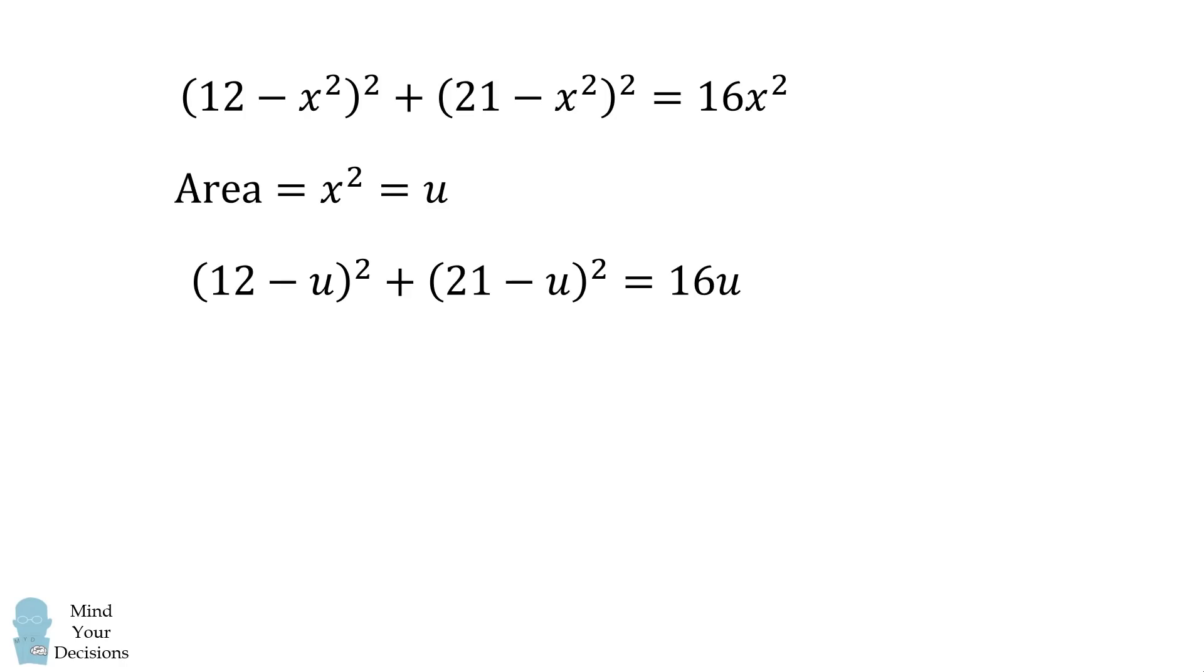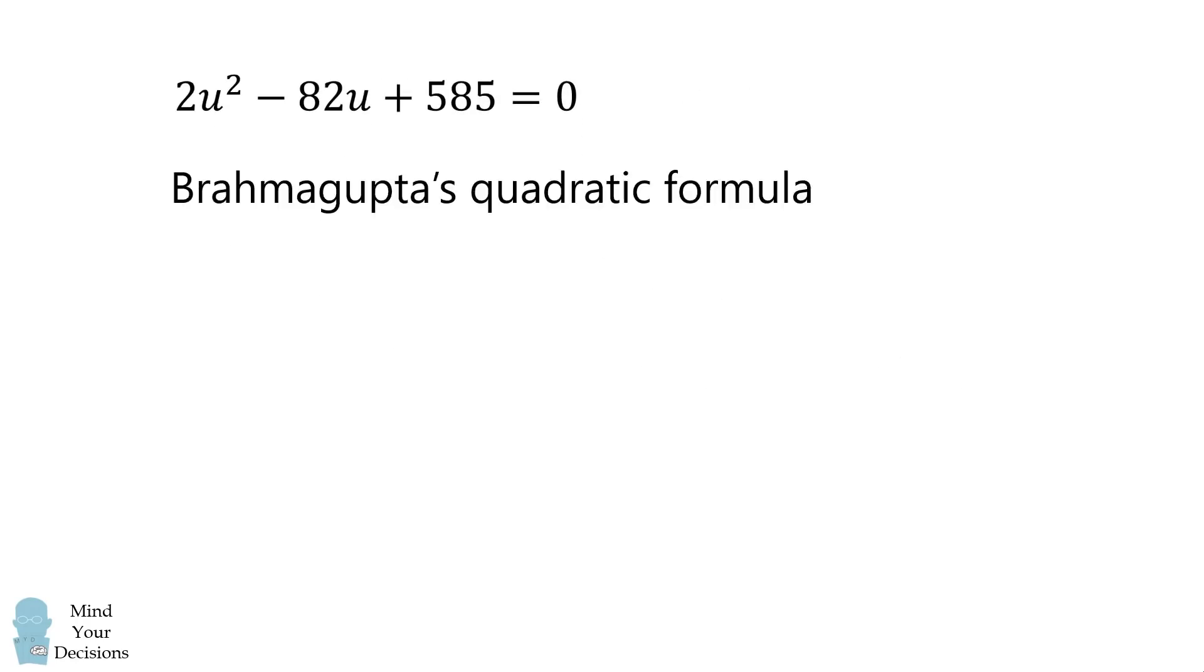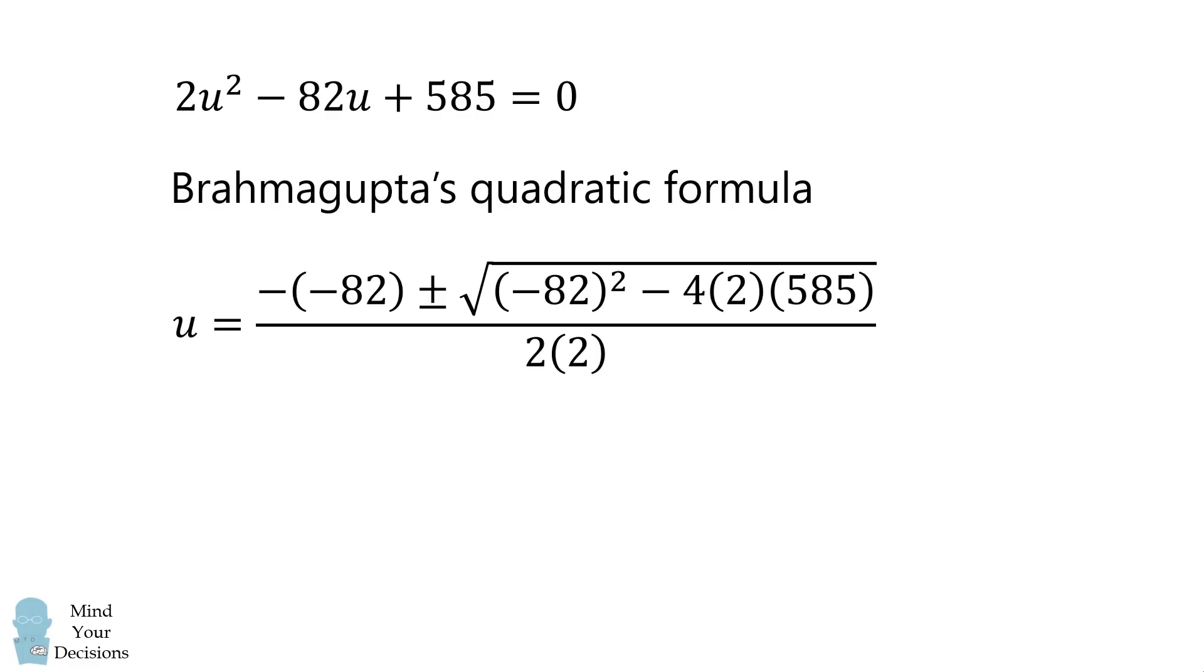Let's substitute it. We'll now expand out, and then collect like terms. What we have is a quadratic equation in u. We can thus use Brahmagupta's quadratic formula to solve for u. We end up with two possibilities. Once we simplify this, we get something that's approximately 31.8, and another possibility that's approximately 9.2.